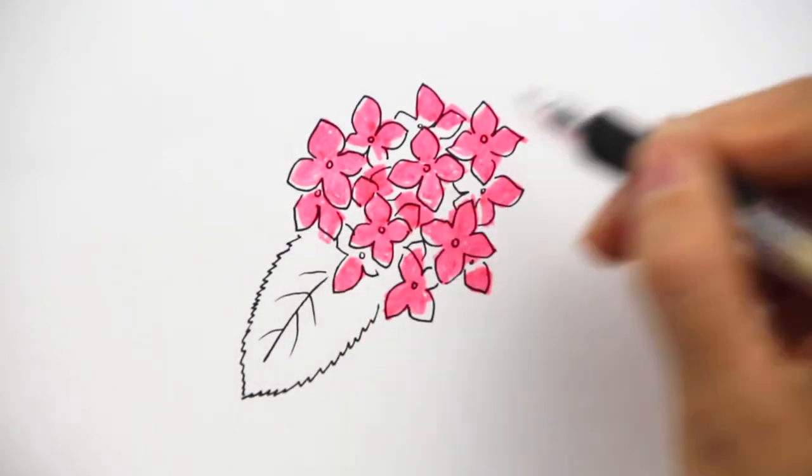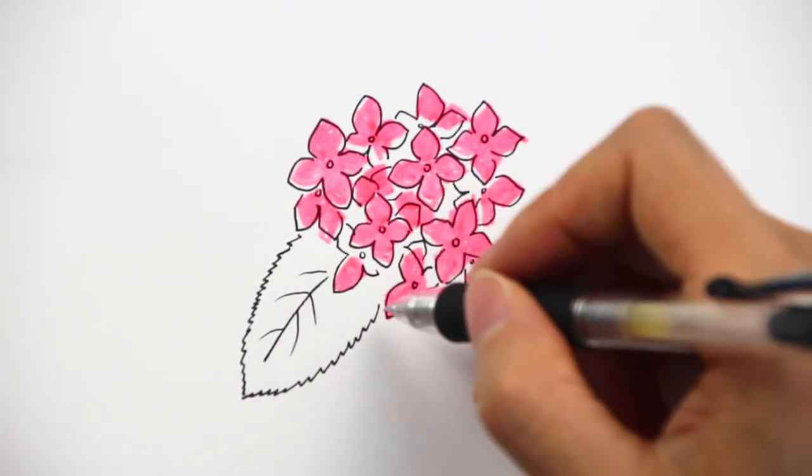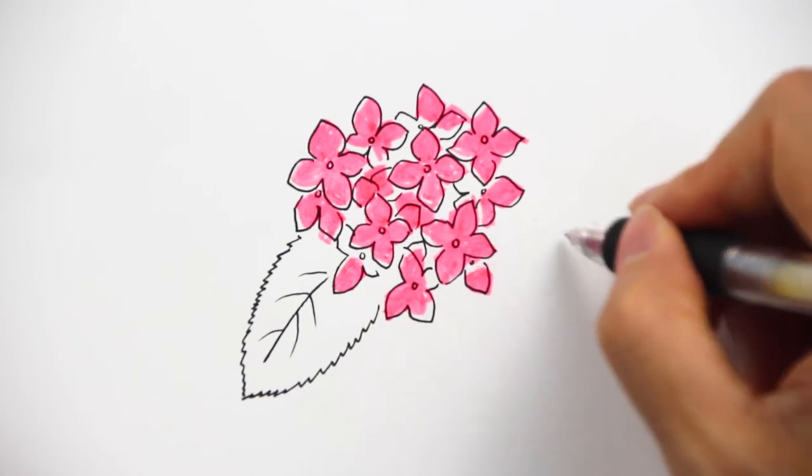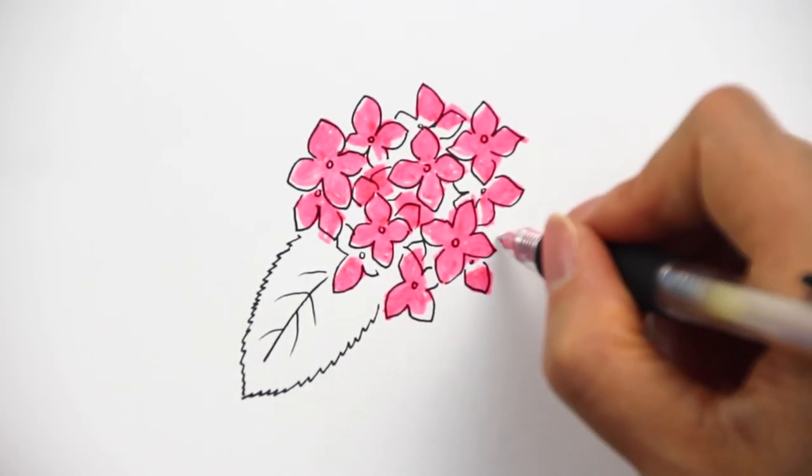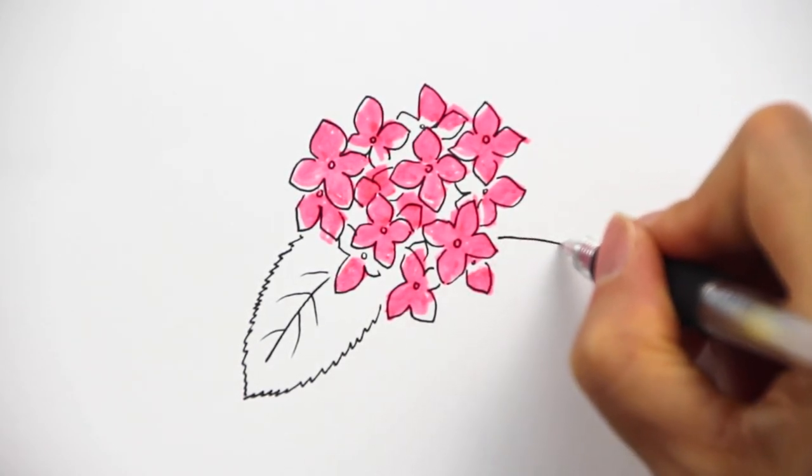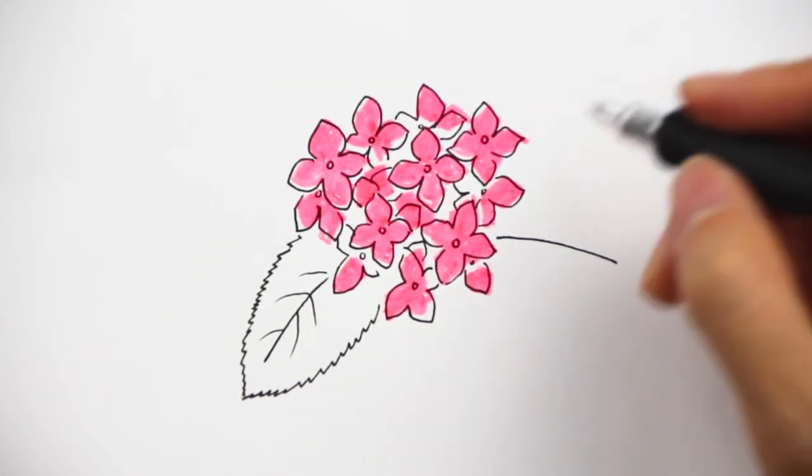The other part we can go to the other direction where we can add this line going into this direction. The way how you actually draw the line will indicate where the leaf is going to extend to.